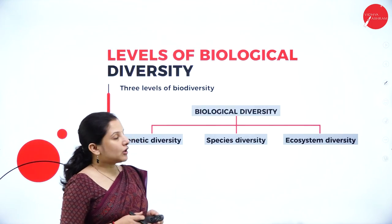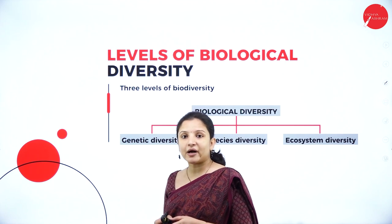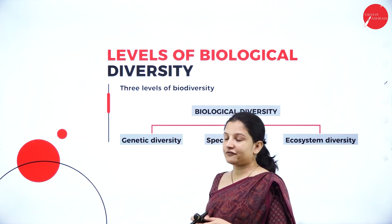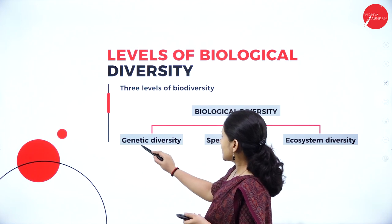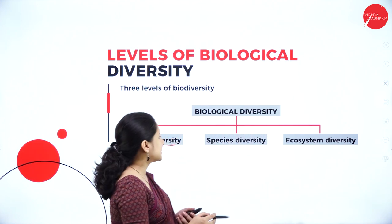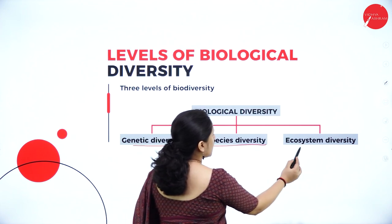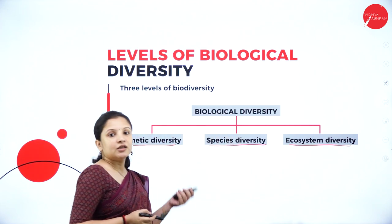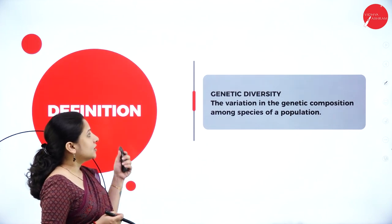Talking about the levels of biodiversity, we can study biodiversity under three different levels: genetic diversity, species diversity, and ecosystem diversity. Let us study each of these one by one.